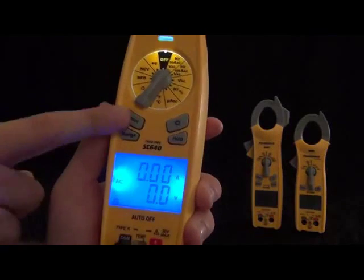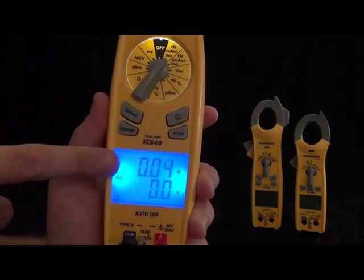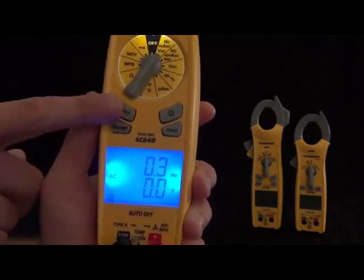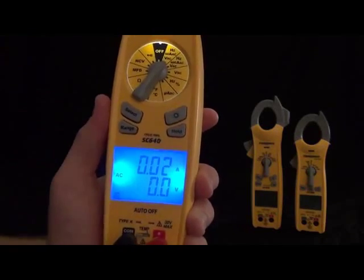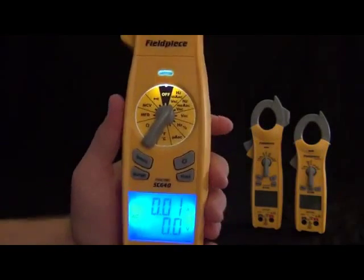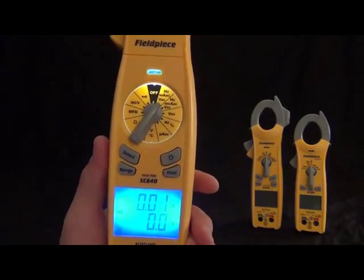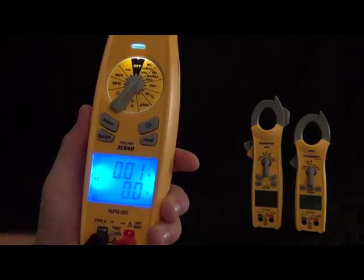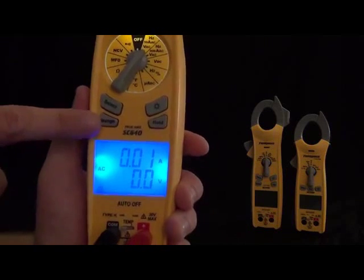Then we got range. If you want to select, this is an auto-ranging meter, and it'll select the range for you. But if you do want to come to a certain range, you'll notice my volts. It's changing the decimal point and the unit. So that's millivolts. There's volts. And then you're going to see the decimal place moving as I do that.